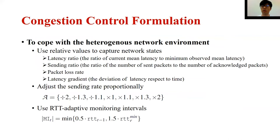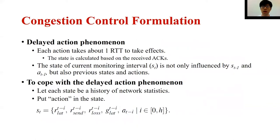We now introduce the training process in detail. We first formulate the congestion control as an extended version of a multi-objective Markov decision process. To cope with the heterogeneous network environment, we use relative values to capture network states, and we seek to adjust sending rates proportionally. The end-to-end latencies of different flows can differ by hundreds of times. A short monitoring interval is not enough to capture the real transition in long RTT scenarios, while setting the interval too long reduces real-time responsiveness in short RTT scenarios. Therefore, we adaptively adjust the length of each monitoring interval according to observed RTT. When modeling the network state, the delayed action phenomenon also has to be considered, meaning that the state observed at the current interval is influenced by a series of past states and actions. To capture these influences, we let each state be a history of network statistics and include the action in the state.